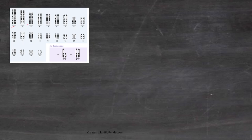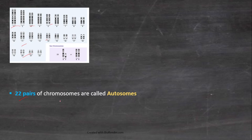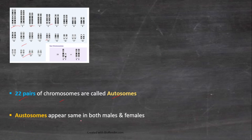As you can see in this picture, in humans there are 23 pairs of chromosomes. Out of these 23 pairs, 22 pairs are common between males and females. These 22 pairs of chromosomes are called autosomes, and they appear the same in both males and females. Each pair of these chromosomes differs in their shape and size, as shown in this picture.